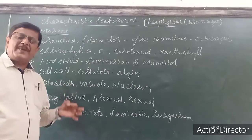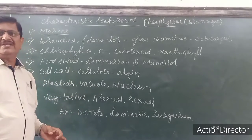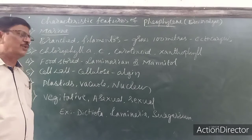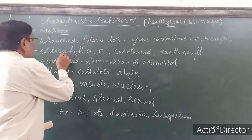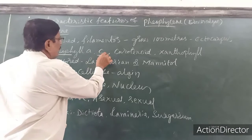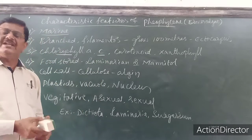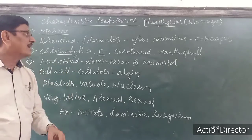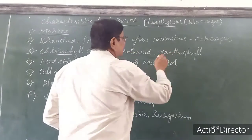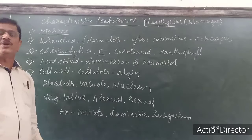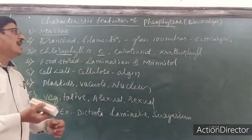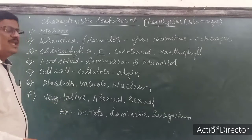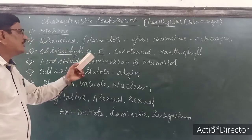This is the pigment. Based on the classification of Phaeophyceae, the pigments present are chlorophyll — which gives green color — along with carotenoid and xanthophyll, which give a brown color. The brown color is dominant in Phaeophyceae.